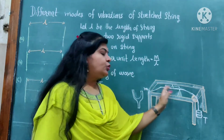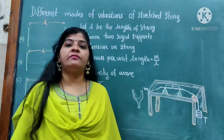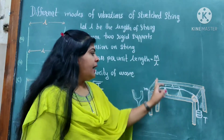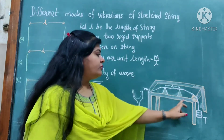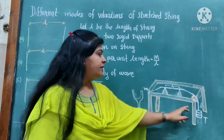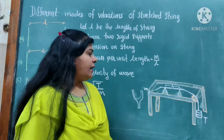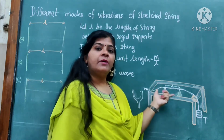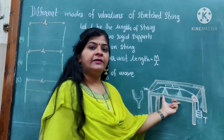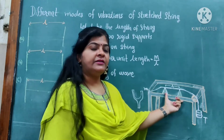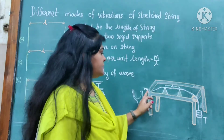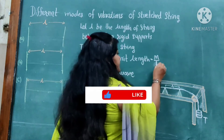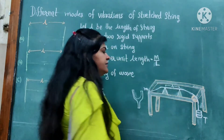Small m represents the mass per unit length. Mass per unit length means the total mass of the wire is denoted by capital M, and the total length of the wire is L. That ratio, mass per unit length, is M divided by L. Here the length of this wire is L.